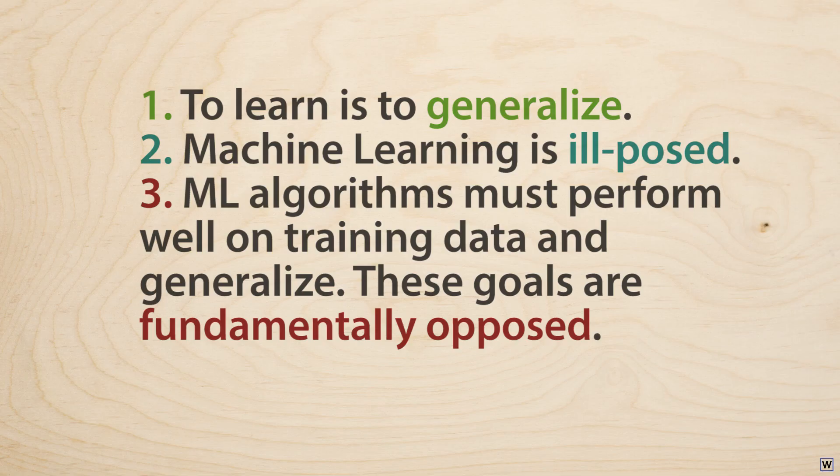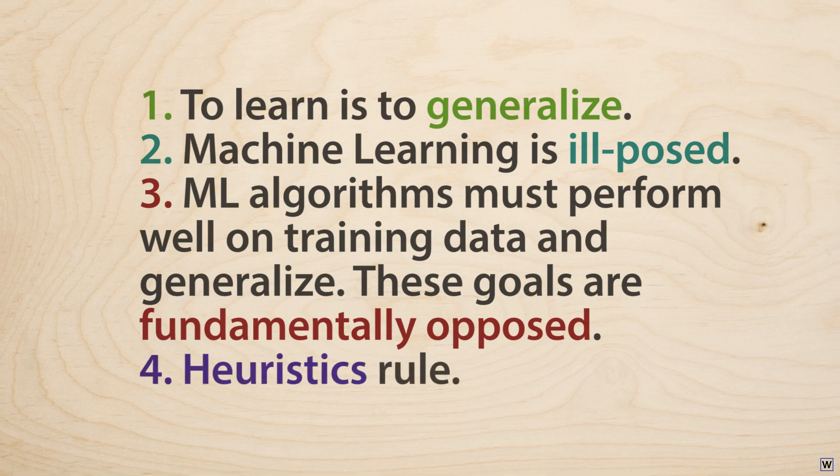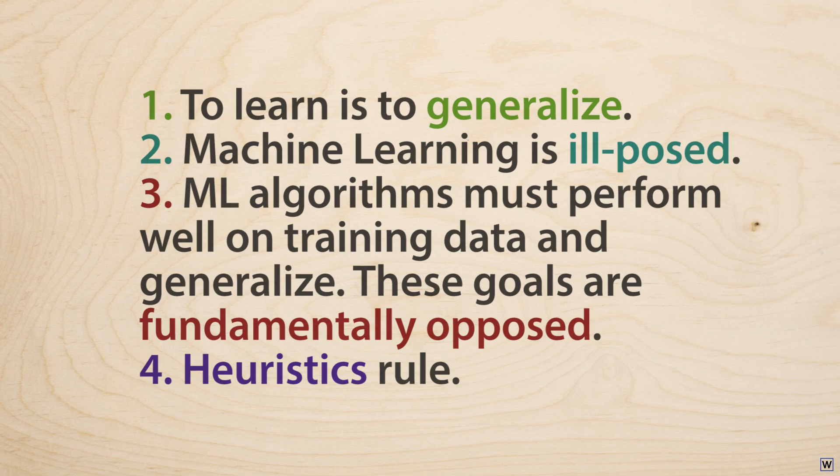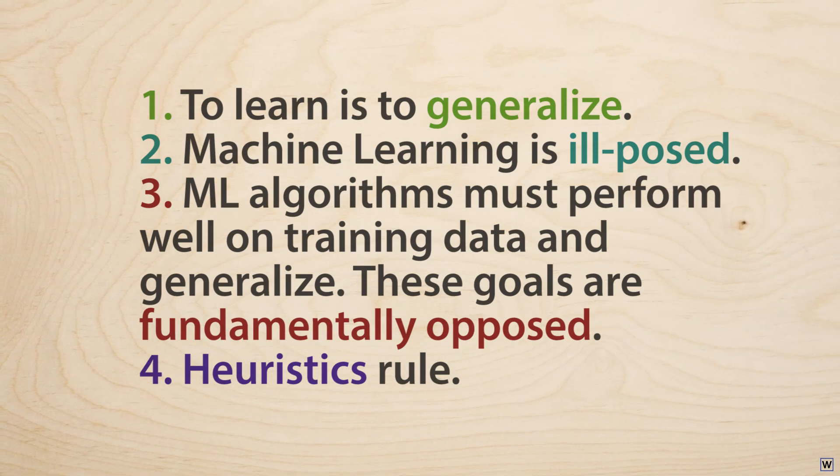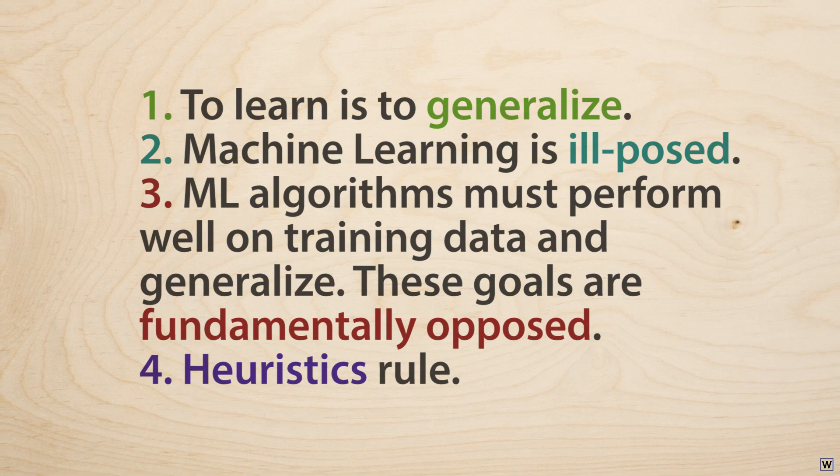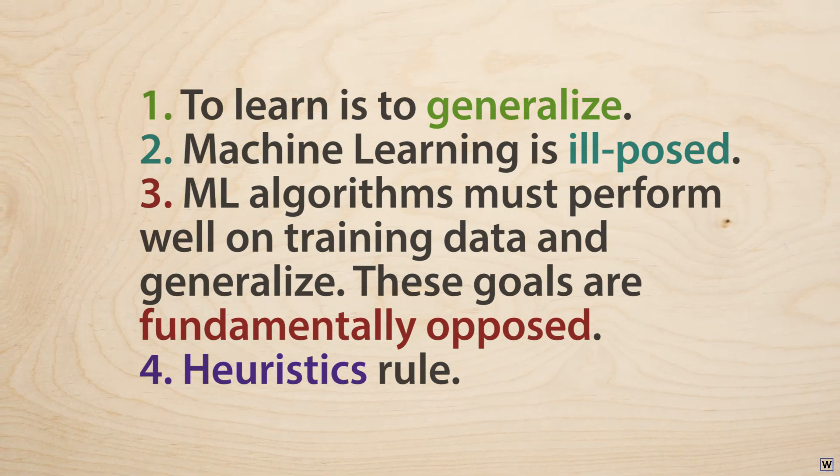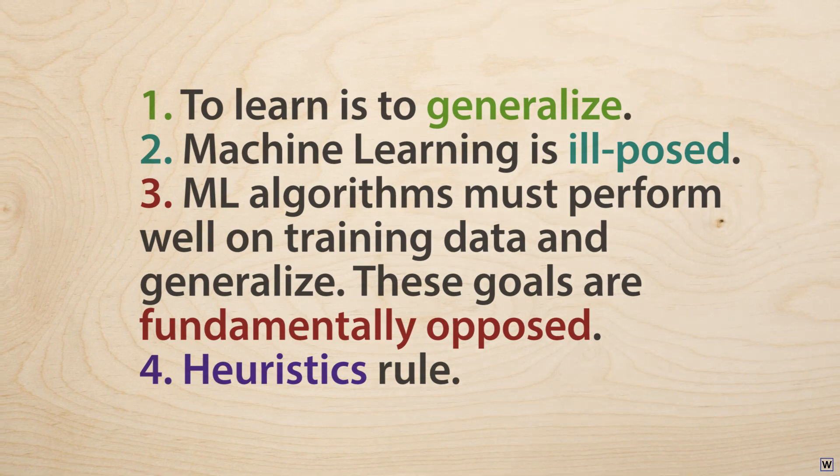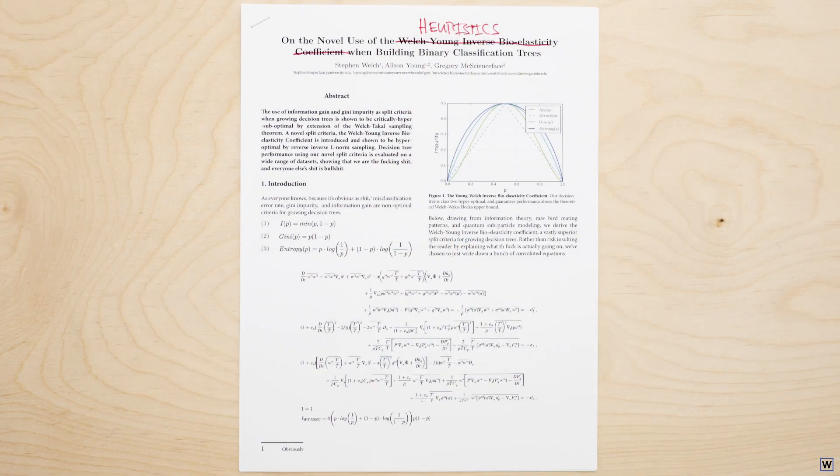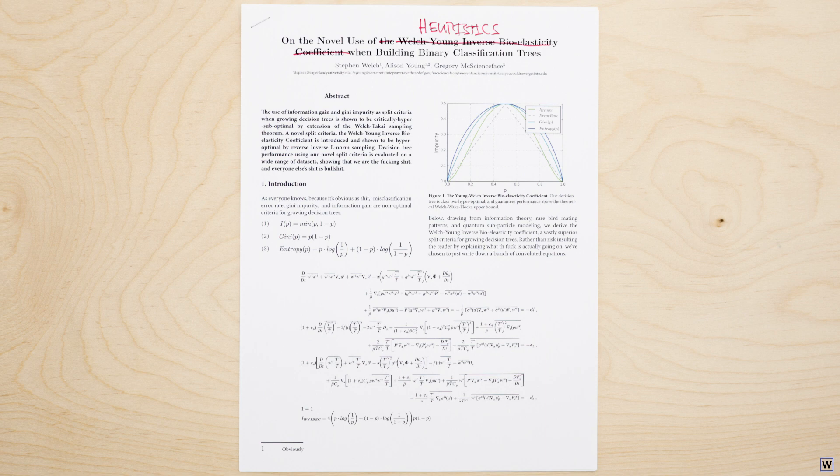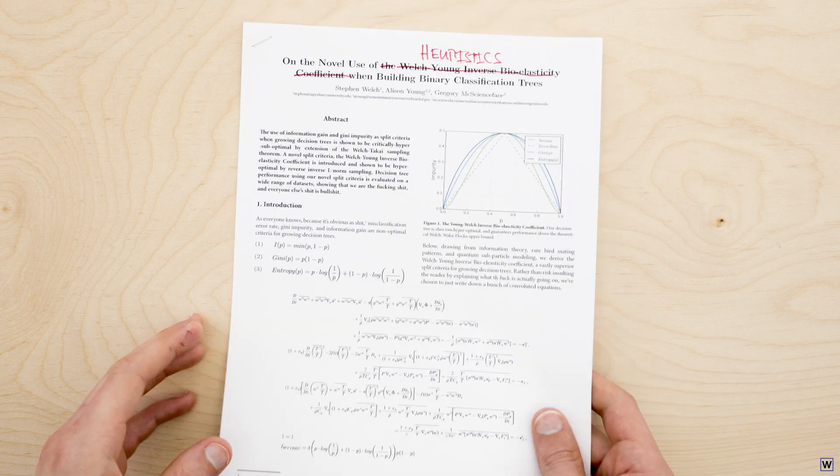This brings us to our final big point. In machine learning, heuristics rule. It's easy to forget that machine learning just hasn't been around that long. And many of the techniques used in practice are simply heuristics. They just work. This can be both frustrating and liberating. Although machine learning can appear dense, rigorous, and impenetrable from the outside, once you find the right angle of attack, it often quickly becomes apparent that much of what we know about machine learning came from clever, but more importantly persistent researchers making educated guesses.